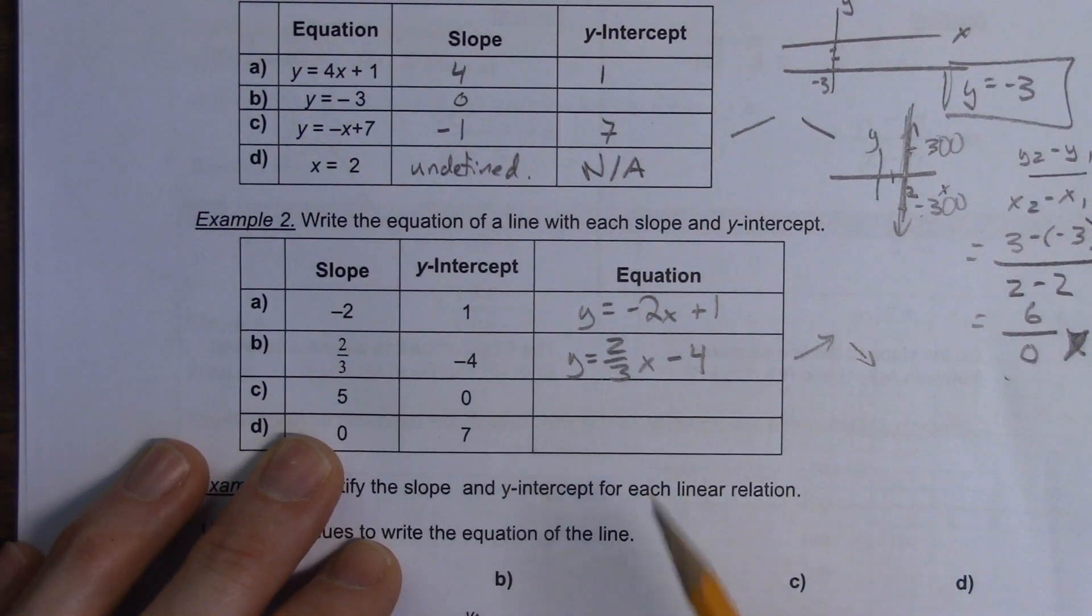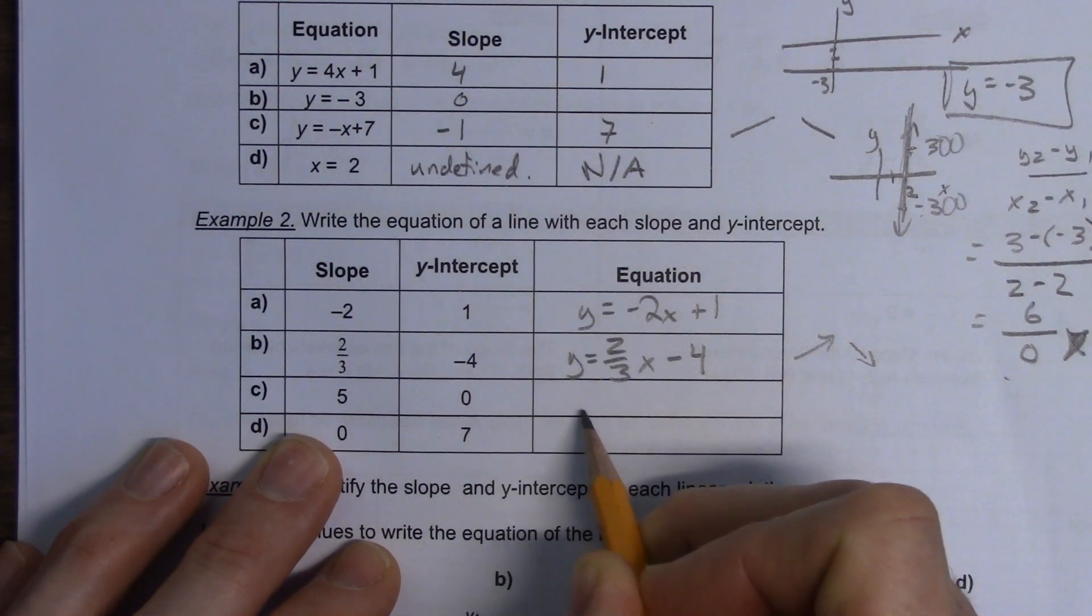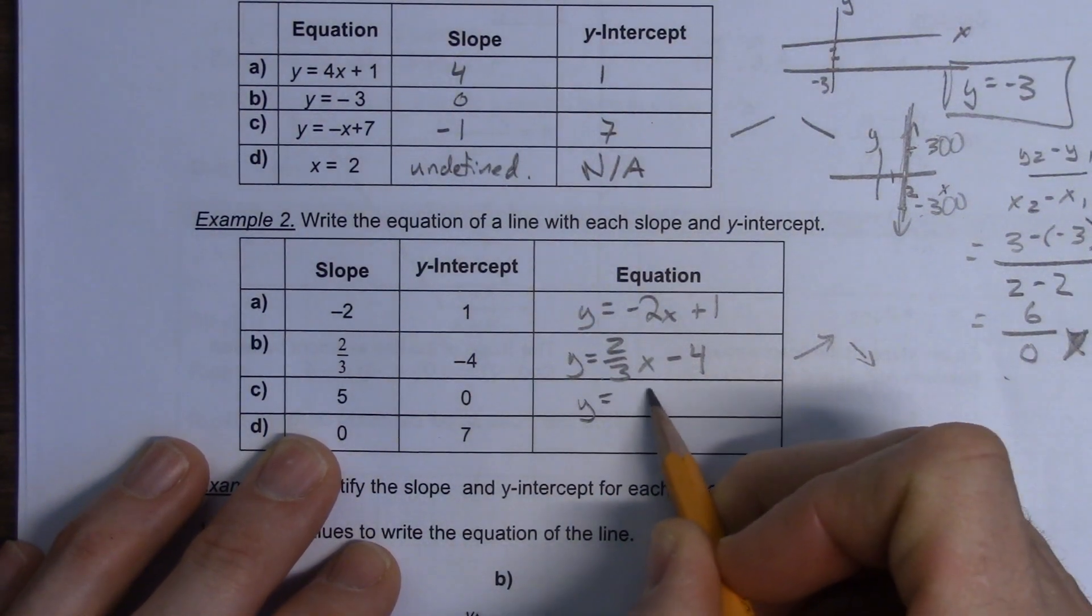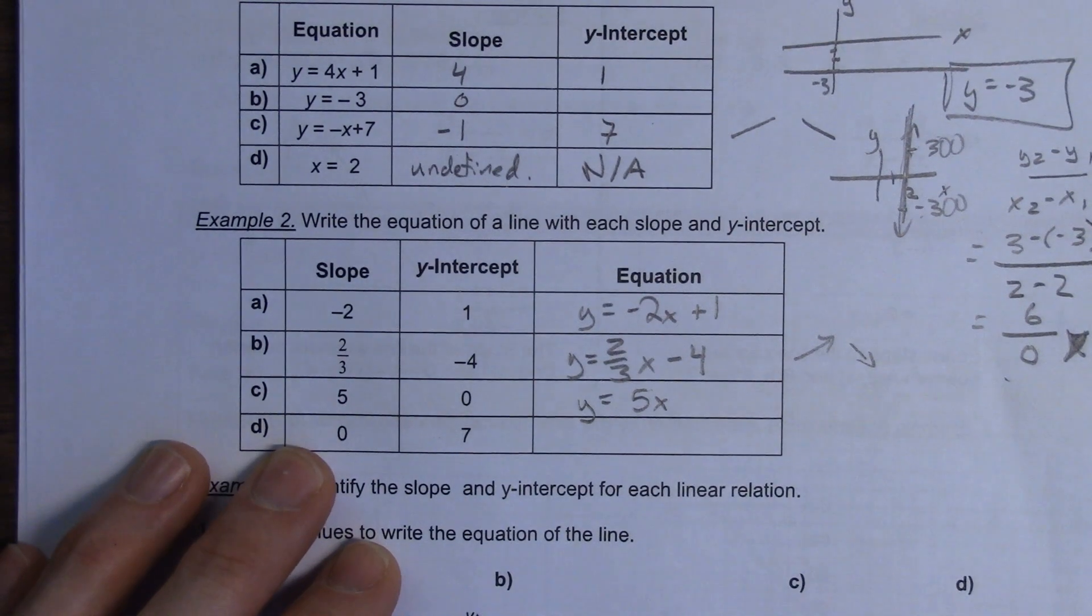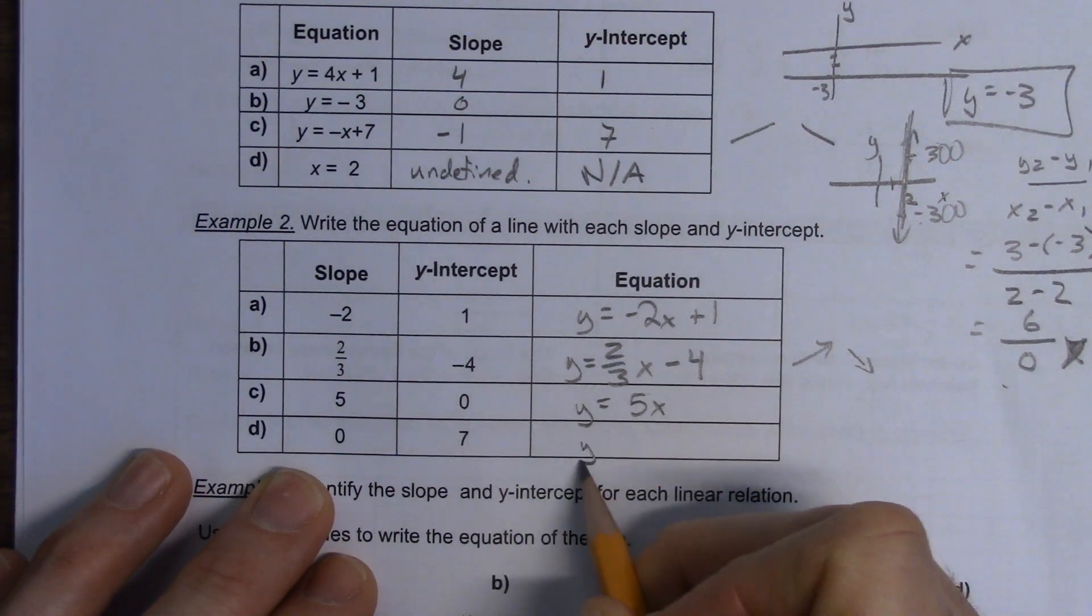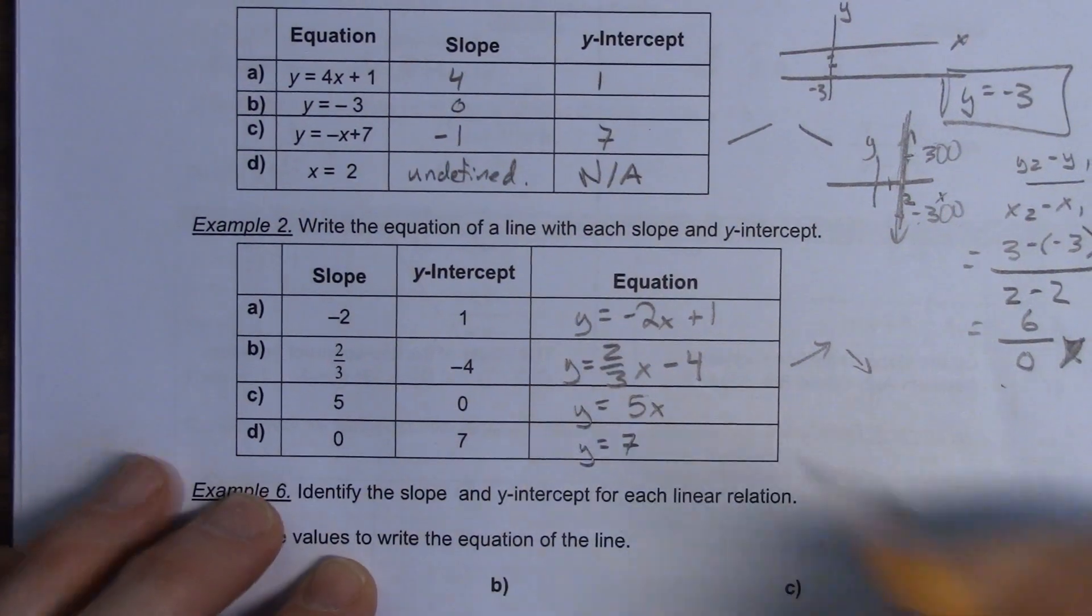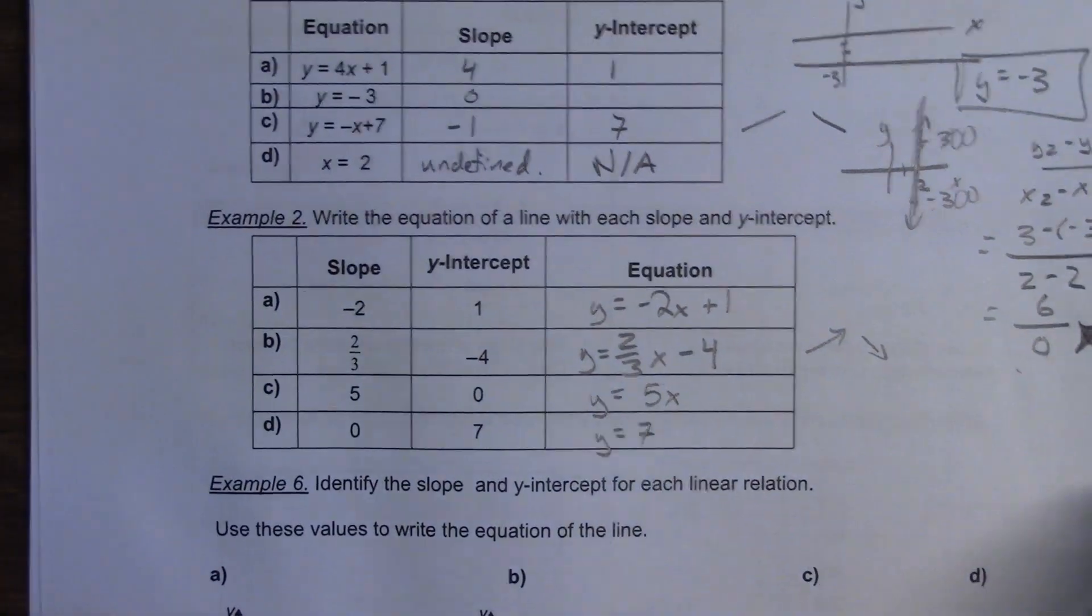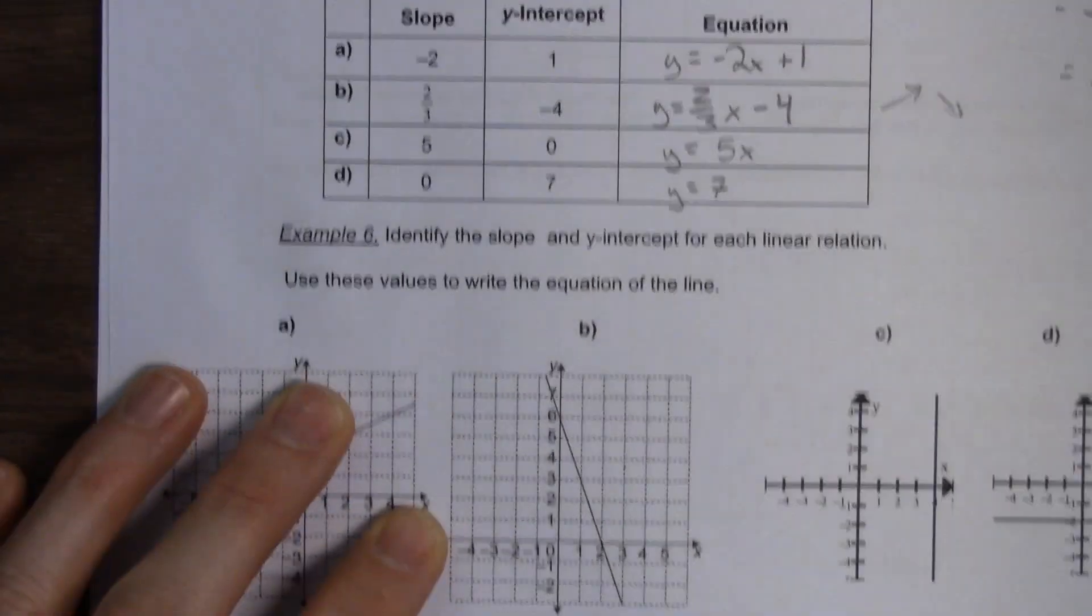All right. Next one. Jafet? Y equals 5X because there's no slope. I mean, there's no Y-intercept. Yep. Good. Next one. Yep, Max. Y equals plus 7. Good. Excellent. All right. Moving right along.